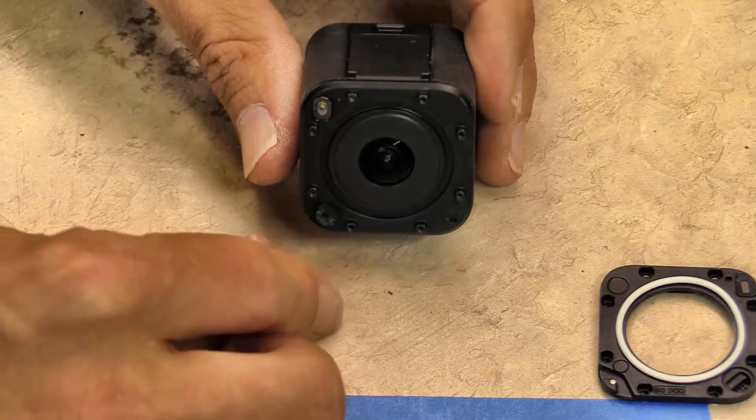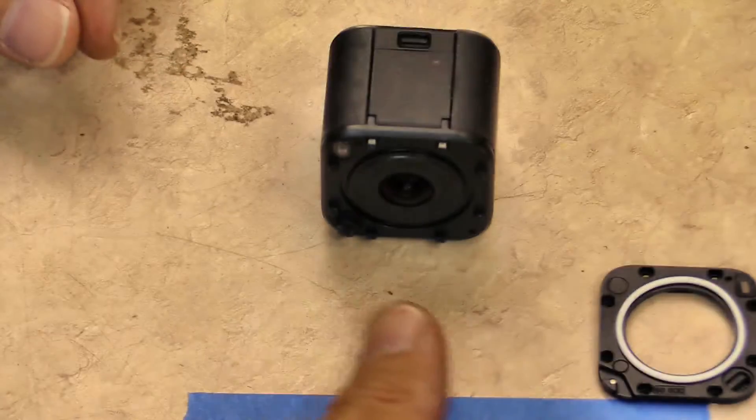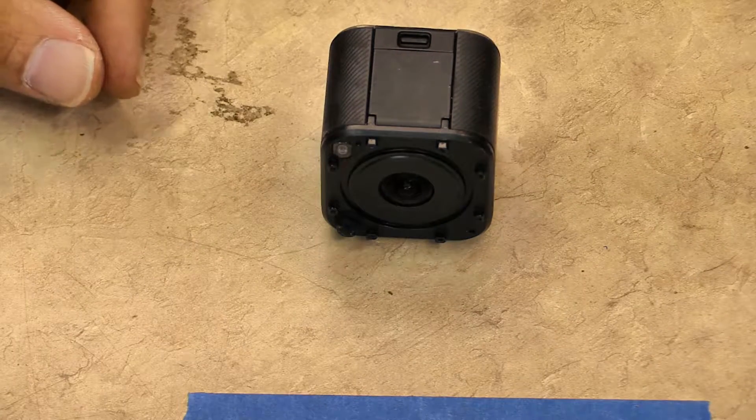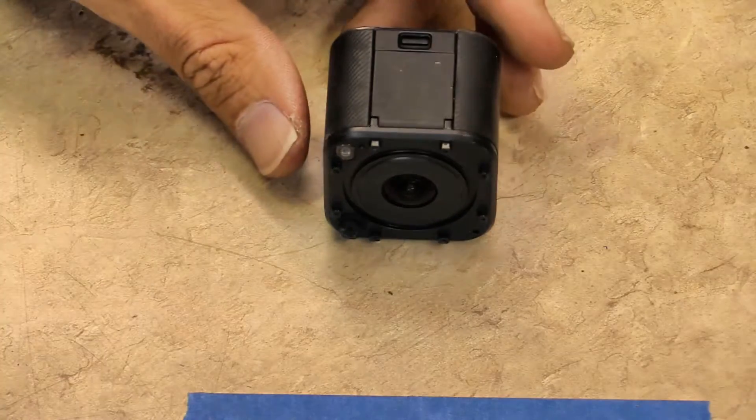So remove these teeny tiny screws and try heating it up a little bit and see if we can soften - I think there's just glue around here - see if we can soften it up enough to open it up.